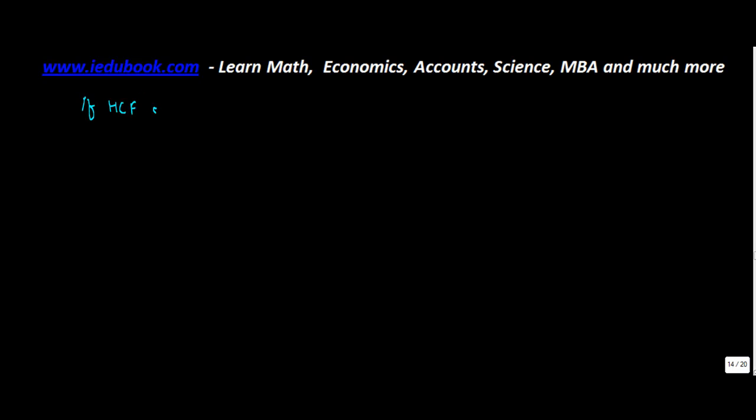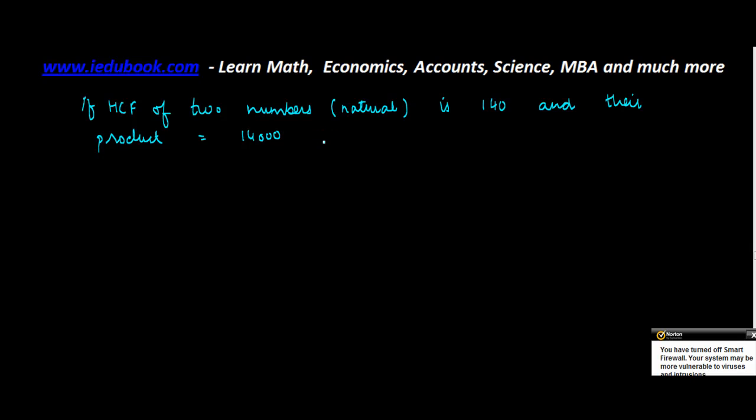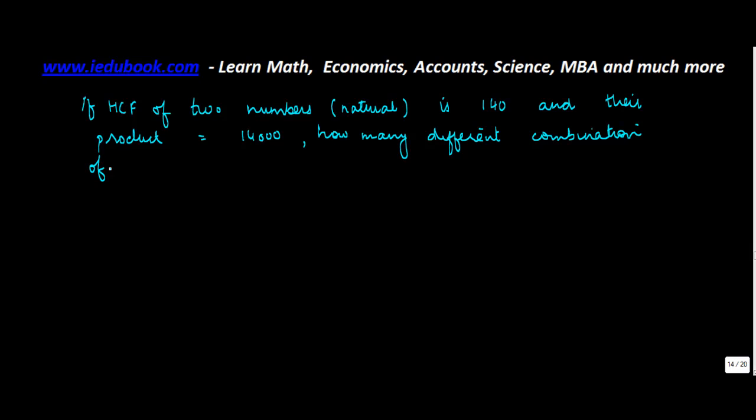If HCF of two natural numbers is 140 and their product is equal to 14,000, how many different combinations of values can these two numbers have?